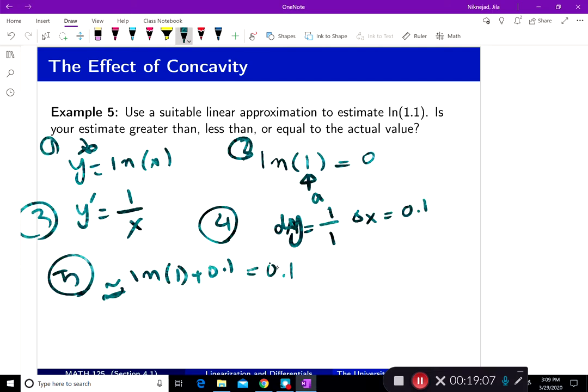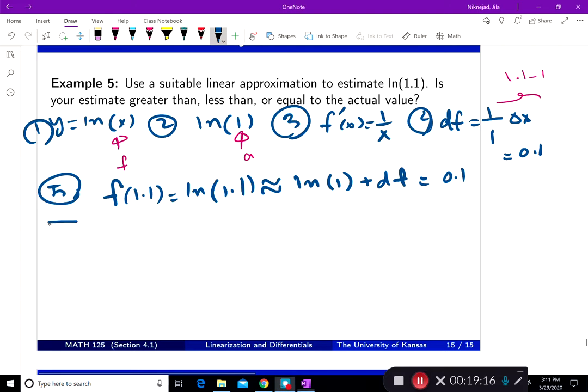The other way is just writing the linearization down. So let's write the linearization down also. The second method of doing this is write it down as linearization. Again, the information that you got in here gives me linearization at 1, because A is 1, of 1.1. That's what we want to find.